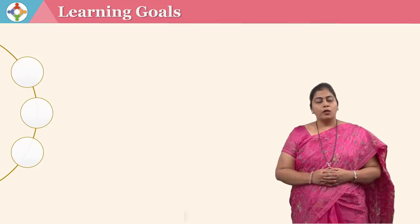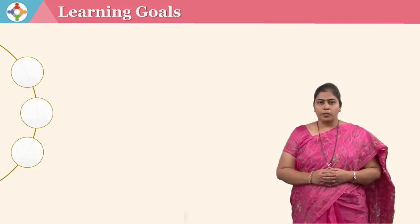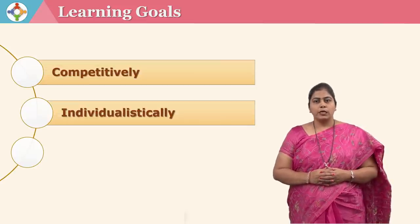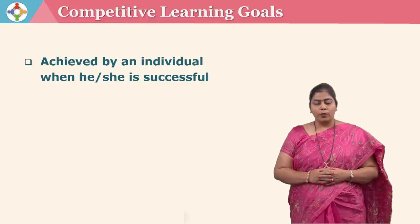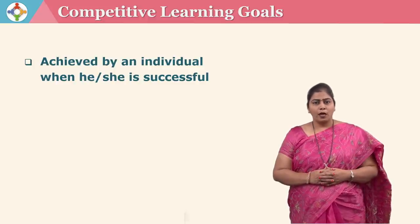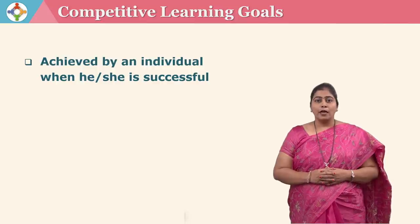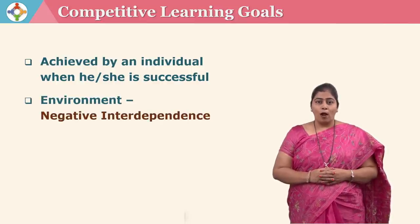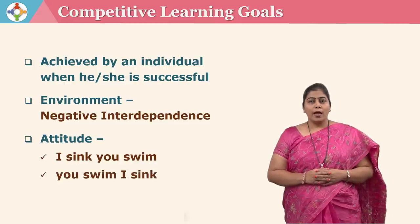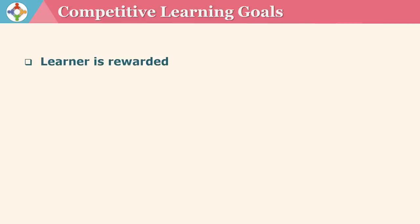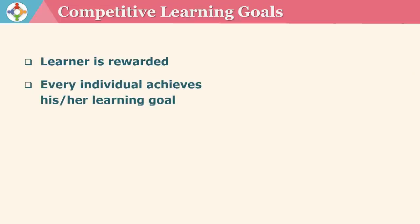In a classroom, learning goals can be structured in three different ways: competitively, individualistically and cooperatively. Competitive learning goals are achieved by an individual when he or she is successful and the other fails. Basically in this kind of learning goal the entire environment is that of negative interdependence — it's a situation where I swim, you sink, or you sink and I swim. In competitive learning goal the winner is rewarded and every individual achieves his or her own learning goal.